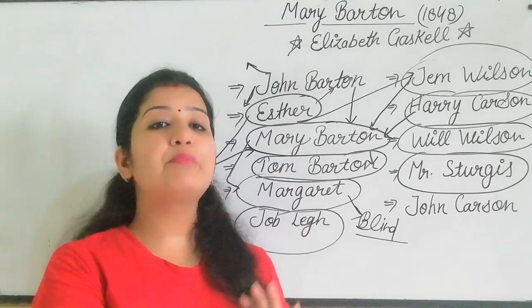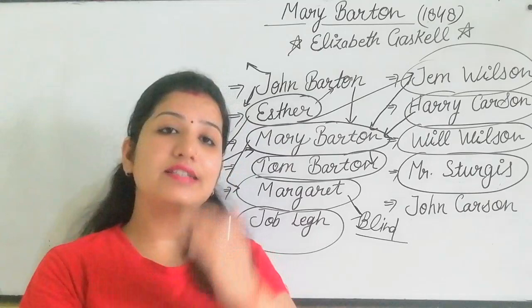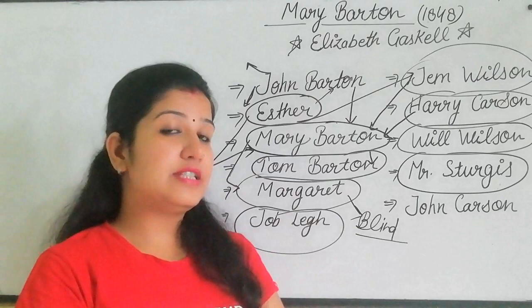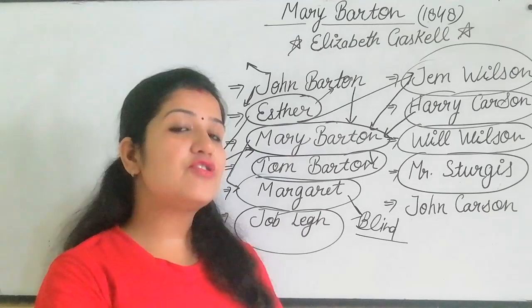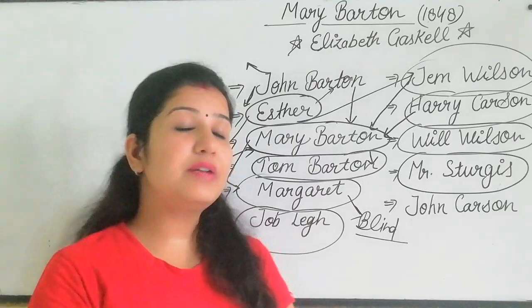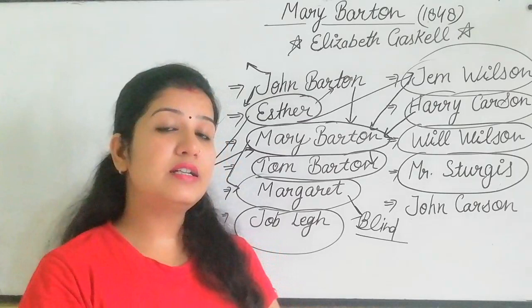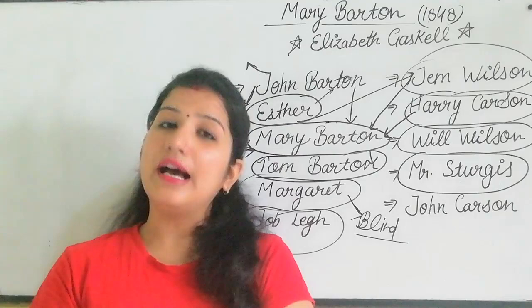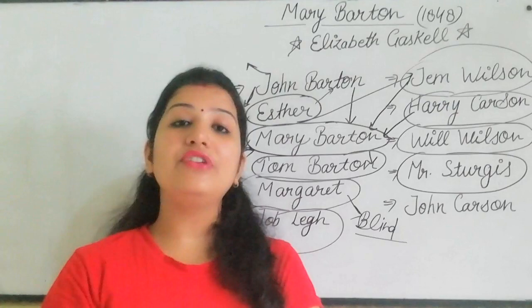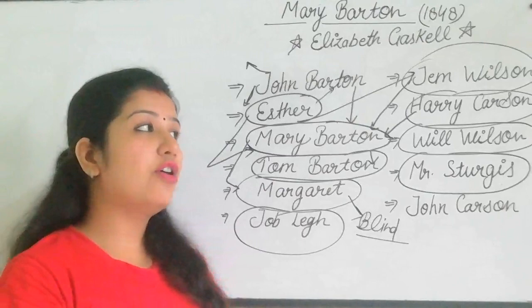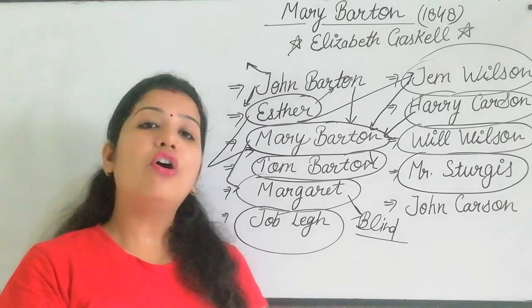Mary Barton leaves Manchester. She didn't want her father to be blamed publicly. Jem Wilson is acquitted. Mary and Jem Wilson are reunited. In the end, the couple gets married. John Carson, who is Harry Carson's father, had initially wanted to pursue the case and seek an inquiry.